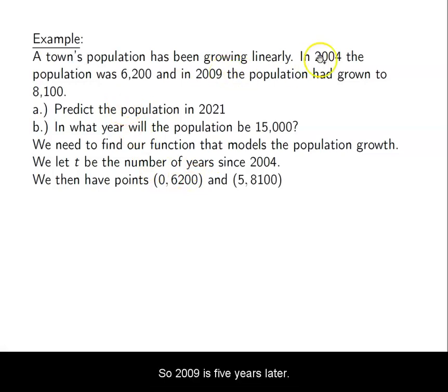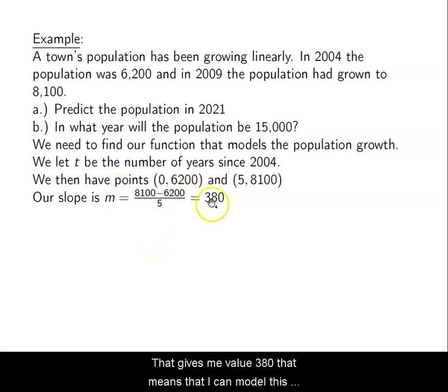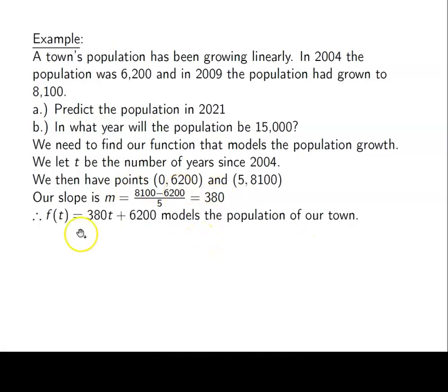So 2009 is five years later. So I know that my slope is going to be (8100 - 6200)/5. That gives me a value of 380. That means that I can model this with f(t) = 380t + 6200. So that will be my linear model that models the linear growth of the population of my town.